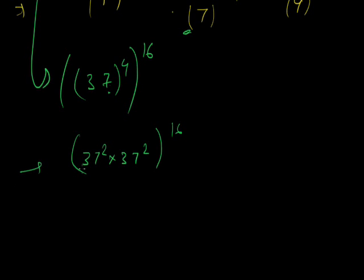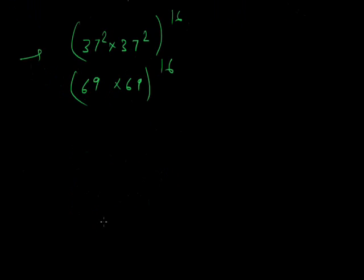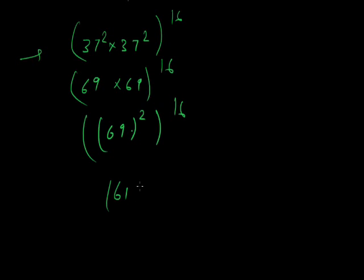Now we have 61^16. Using concept one: unit digit is 1, tens digit is 6, power is 16. Multiply 6 by 6 to get 36, so last two digits are 61. Therefore, the last two digits of 37^64 are 61.